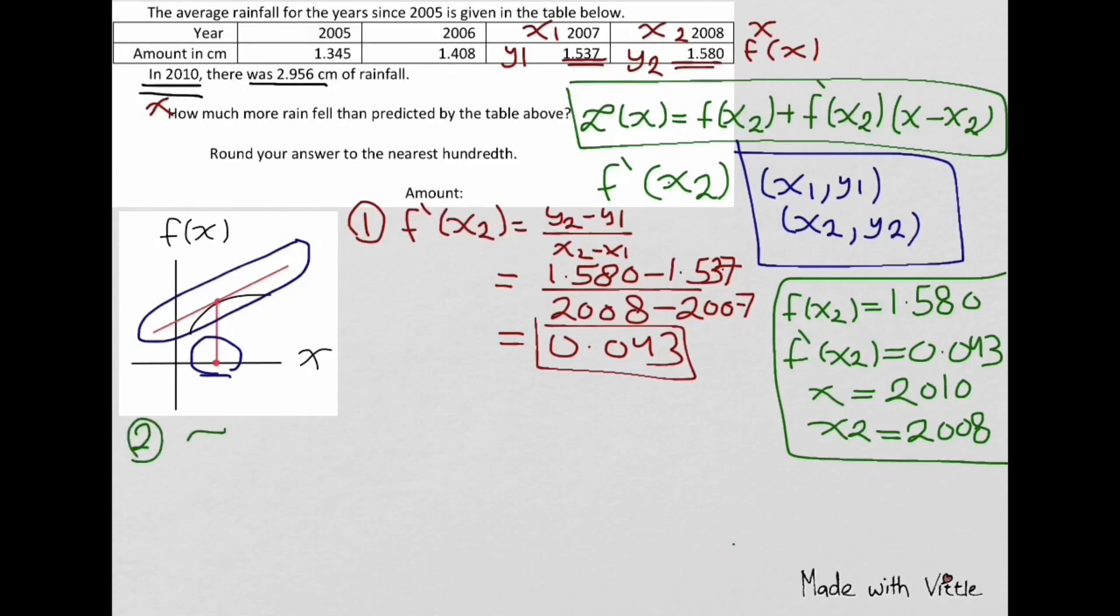Substituting into the formula: 1.580 plus 0.043 times the quantity 2010 minus 2008. The answer will be 1.666.